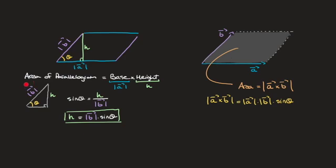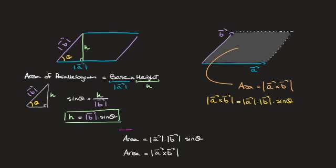Combining this result with the fact that area equals the magnitude of a times h, we can state that the area of the parallelogram equals the magnitude of vector a times the magnitude of vector b times sine of theta. Looking back at the formula from earlier, we see that's equal to the magnitude of the cross product of a and b. So the area equals the magnitude of the cross product of vectors a and b.